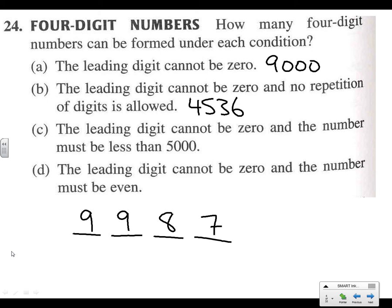For part (c), the leading digit cannot be zero and the number must be less than 5,000. That means we can only have 4, 3, 2, or 1 in the first spot — so that's only 4 options. Repetition is allowed, so there are 10 options for each of the remaining three digits. That gives us 4 × 10 × 10 × 10 = 4,000.